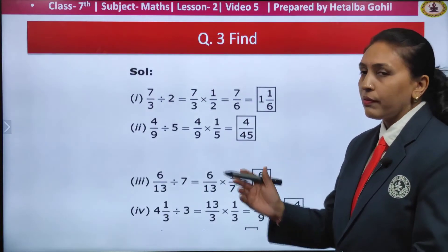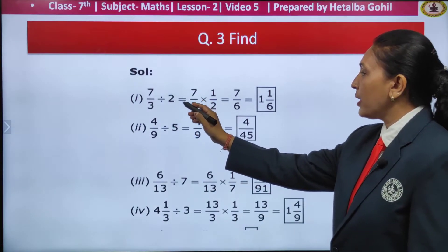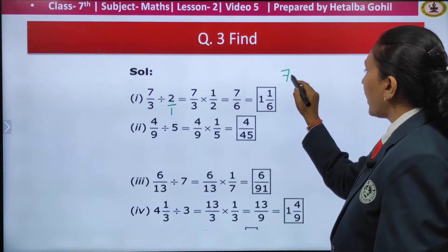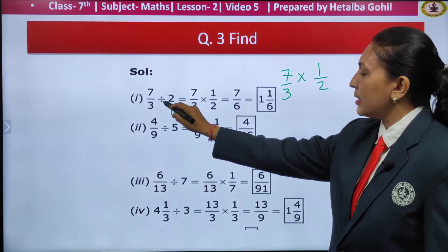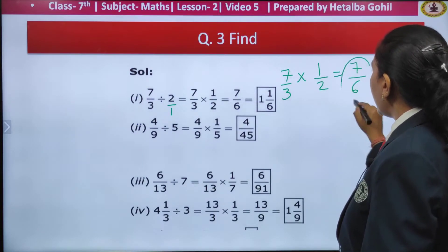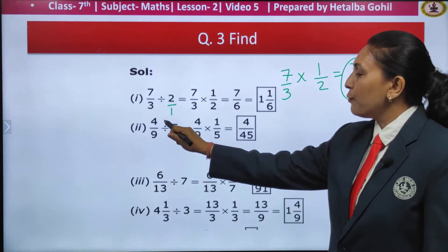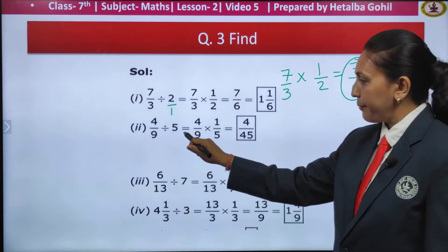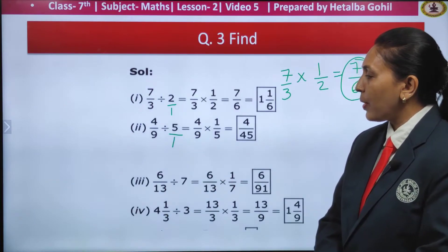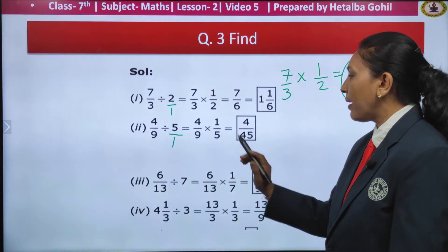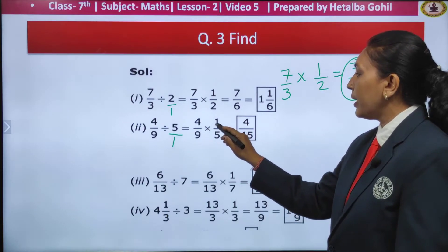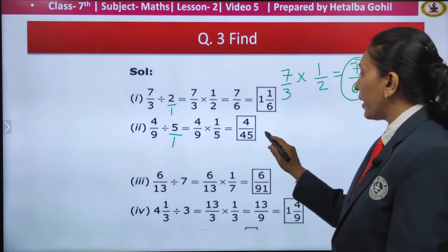Question 3 — find, here also we have to divide the fractions. First: 7 by 3 divided by 2. Here 2 has no denominator, so I take it as 1. So 7 by 3 into 1 upon 2 — after changing the sign I flip the number to get 1 by 2. Multiply the numerators: 7 by 6 as my answer. Second one: 4 by 9 divided by 5. Written as 4 by 9 multiplied by 1 upon 5 — I will get 4 by 45 as my answer.